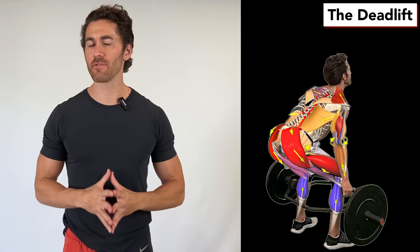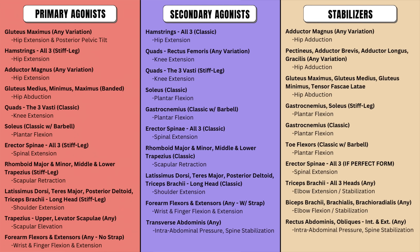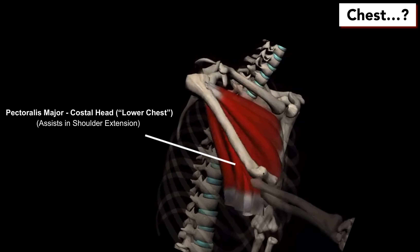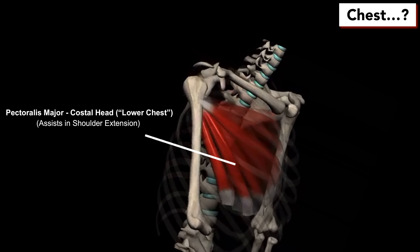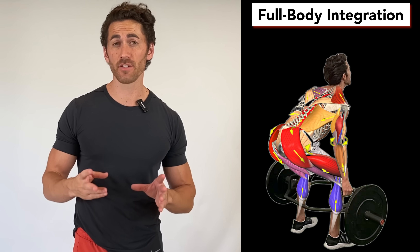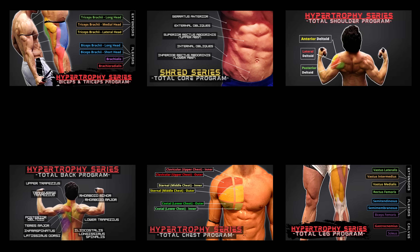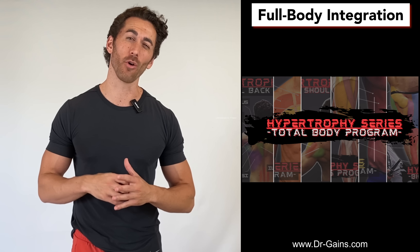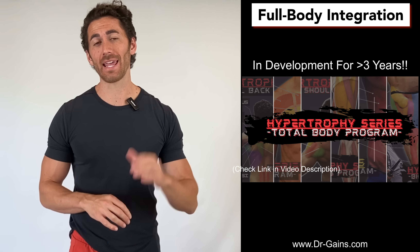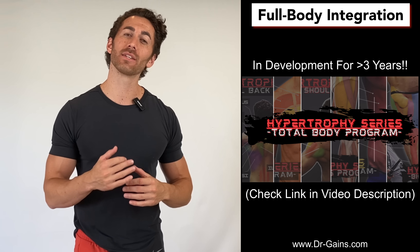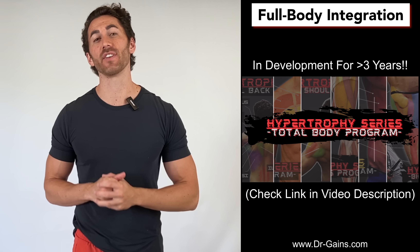So now we can see why the deadlift has a legitimate claim to the title of king of all lifts — it works virtually every single muscle in the body. In fact, the only muscle group that it does not directly target is the chest, although the costal head of pec major in the lower chest does extend the arm and one could argue that the pec stabilizes the shoulder through the exercise. If you want to know how to integrate the deadlift and all of its variations into a comprehensive workout plan, a full body version of a hypertrophy series resistance training program is nearly finished and will be linked in the video description, along with a waitlist to beta test the program before it's finished in return for 50% off.